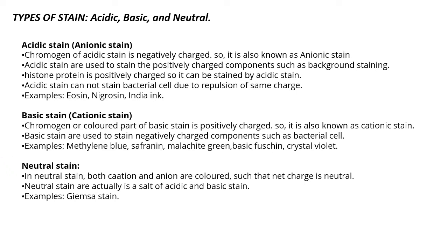Basic stains are cationic stains — the chromogen or colored part of a basic stain is positively charged. Basic stains are used to stain negatively charged components such as bacterial cells. Examples include methylene blue, safranin, malachite green, basic fuchsin, and crystal violet. They can easily enter the bacterial cell wall and stain the cytoplasm. Because they are positively charged, they can enter the negatively charged bacterial cell wall.